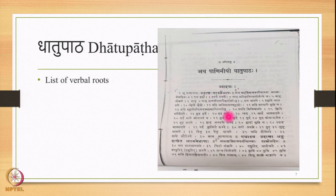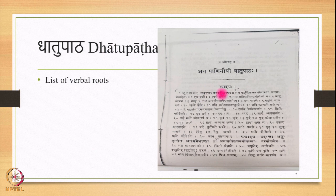So the word Parasmaibhasha indicates that only Taha and Anti are added after the verbal root Bhu and not Te, Ite, Ante. This is how the Dhatu Patha is arranged together with some annotations and some instructions.